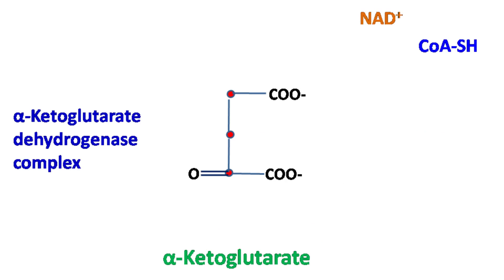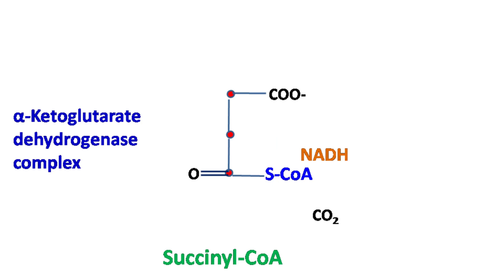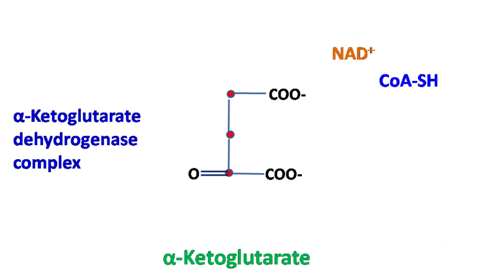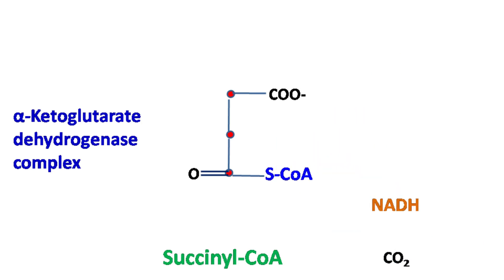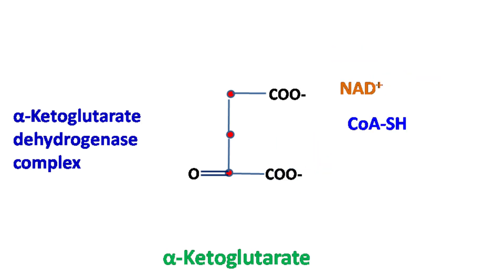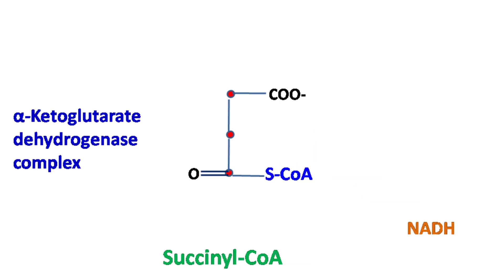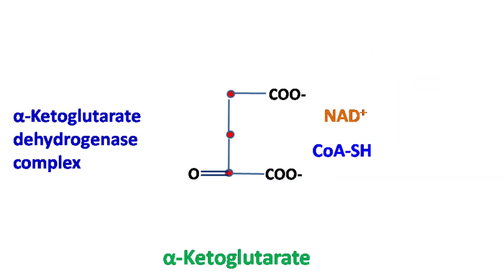Alpha-ketoglutarate dehydrogenase complex then converts alpha-ketoglutarate to succinyl-CoA. During this reaction, CO2 is released along with the addition of Coenzyme A, and NAD+ gets converted into NADH.